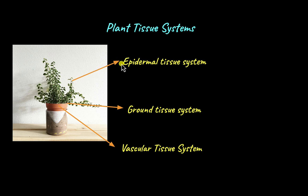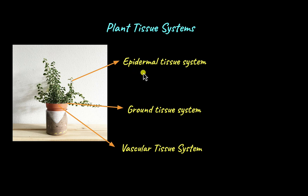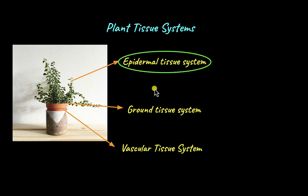Now, just because I have drawn arrow marks from different parts of the plant doesn't mean that these tissue systems are found only there. It can be thought of as going from the outermost layer to the innermost layer. In this video, we will focus on the outermost layer of tissues called the epidermal tissue system. We will tackle the ground tissue system and vascular tissue system in a later video.